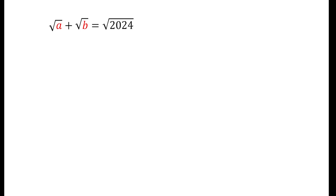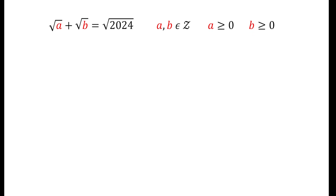Let's first write down our conditions. We know that both a and b are integers and they must be non-negative numbers, meaning both a and b must be greater than or equal to zero, since zero is also a non-negative integer.